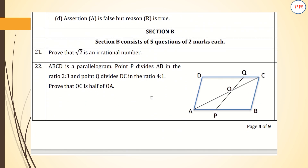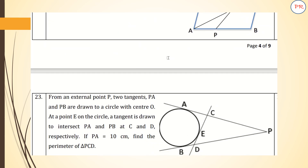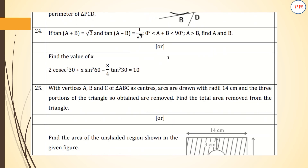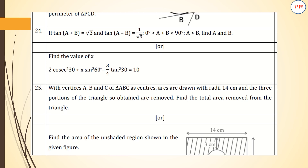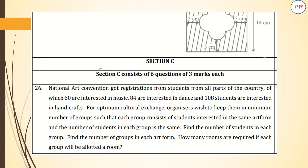Now let us talk about Section B. Section B has five questions of two marks each. The first question is again from real numbers, and the section consists of questions from different chapters. In question 24, you can see trigonometry, and an OR option is given. Question 25 also has an OR option. Likewise, in your final paper also, two questions will have OR options.